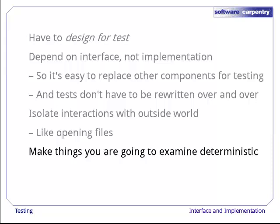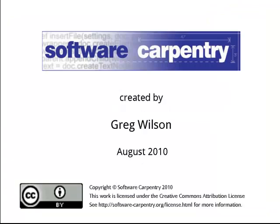Finally, you should make the things you are going to examine to check the result of a test deterministic, i.e. the result of a particular function call should always be exactly the same value so that you can compare it directly to the expected result. Unfortunately, this last rule can sometimes be hard to follow in scientific programs. Our next episode will explain why.